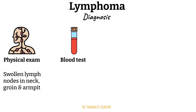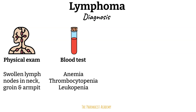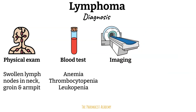However, in advanced forms of lymphoma, the cancer spreads to the bone marrow where blood cells are produced. The bone marrow becomes crowded with cancer lymphocytes, leaving less space for healthy red blood cells, platelets, and white blood cells. In those cases, a blood test will show a decrease in red blood cells, platelets, and white blood cells. Imaging tests such as CT scan, PET scan, or MRI can also be done, showing the size and spread of affected lymph nodes or organs.